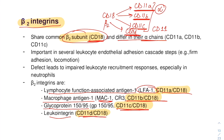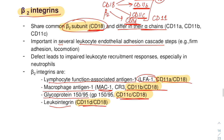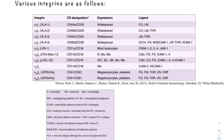These beta-2 integrins play a very important role in the leukocyte-endothelial adhesion cascade, and their defect leads to leukocyte adhesion defects type 1 and type 3. Beta-2 integrins are very important to learn because their mutations cause the primary immunodeficiency disorder leukocyte adhesion defect.